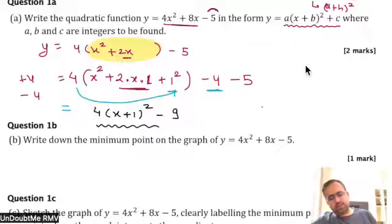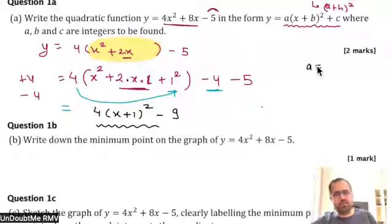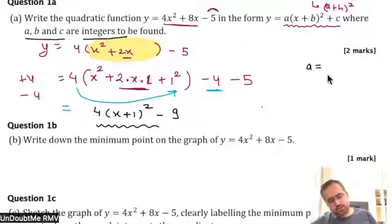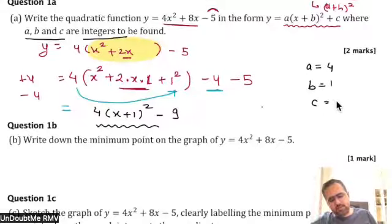Student asks: Does it have to be a plus? Teacher clarifies: It doesn't have to be plus — it can be minus also, because a, b, c are integers to be found, and integers can be positive or negative. So a will be 4, b will be 1, and c will be minus 9.